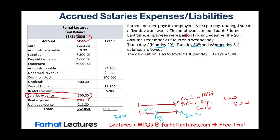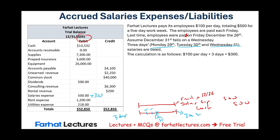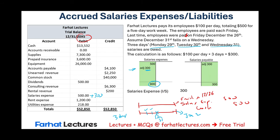I owe the employees $300. That means I have to record an additional $300 on top of my $500 for those three days, because those salaries are accrued — they happened but I did not pay yet. Therefore, I will debit salaries expense $300, making my total salaries expense for the year $800. I'm not paying them till January, so I credit salaries payable $300. On my trial balance, salaries payable appears as a liability.